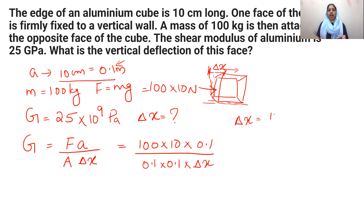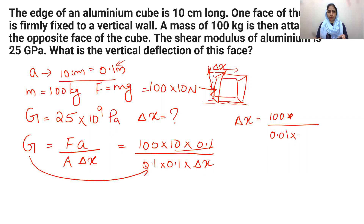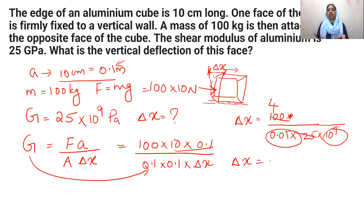Delta x is 100 into 10 into 0.1 divided by 0.1 into 0.1 into G. The area is 0.01 and G is 25 into 10 raised to 9. Simplifying, 100 divided by 25 is 4. Therefore, delta x is equal to 4 into 10 raised to minus 6 meters. This is the deflection in the cube.